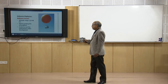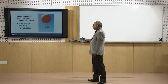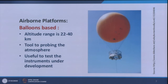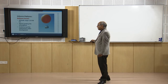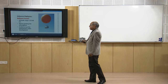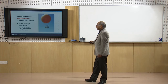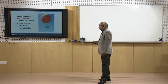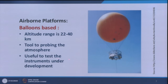Airborne platforms may be balloon-based — the height may not be much, up to about 40 meters — and are useful for probing the lower atmosphere, which is very close to earth. Phenomena like fog, smog, or pollution very close to the earth can be sensed by sensors on board these balloons. They may be manned or unmanned, and are useful to test instruments under development before going for spaceborne systems.